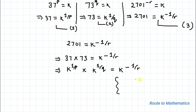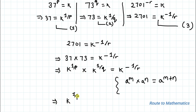Now by using the exponential product rule — a^m × a^n = a^(m+n) — we can write the above equation as k^(1/p + 1/q) = k^(−1/r).